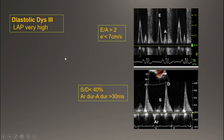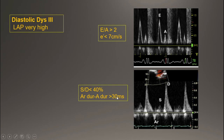The final rule: when E to A is more than 2 and E prime is less than 7 cm/s, the patient has diastolic dysfunction type 3 with very high left atrial pressure. Alternatively, in patients with other characteristic findings of diastolic dysfunction, if S to D ratio is less than 40 percent, or AR duration minus A duration is more than 30 milliseconds, we will have diastolic dysfunction type 3.